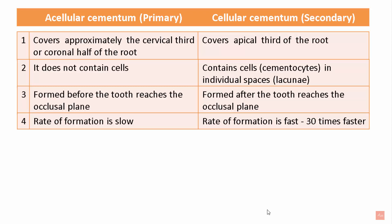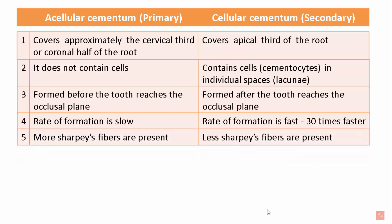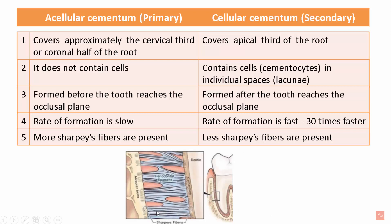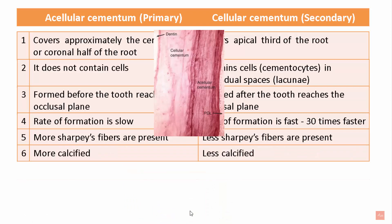The rate of formation of acellular cementum is slow compared to cellular cementum, which forms 30 times faster because the cellular cementum has more cells to work with. The acellular cementum also has a greater number of Sharpey's fibers, while the cellular cementum has fewer. Sharpey's fibers are fibers of the periodontal ligament inserted into the cementum on one end and into the alveolar bone on the other — they are more calcified and present in the coronal portion.